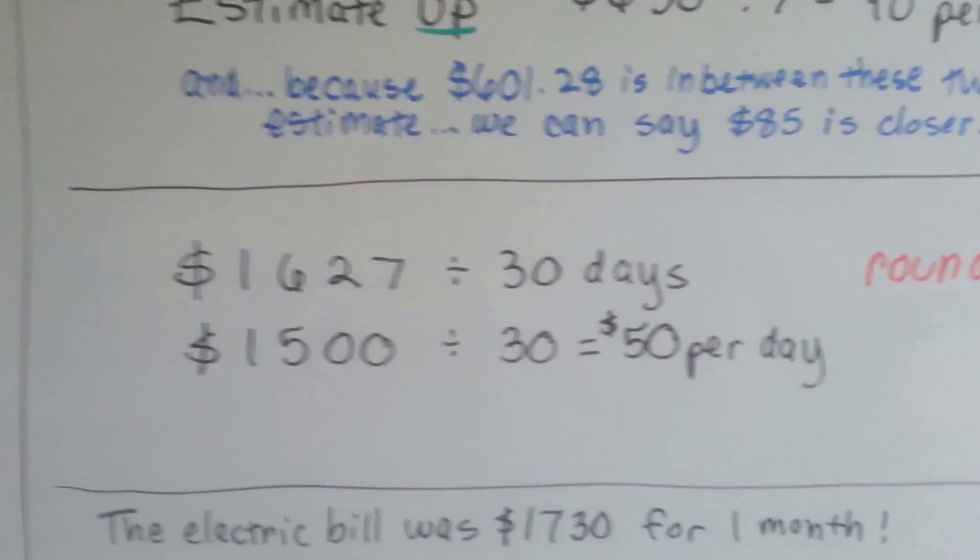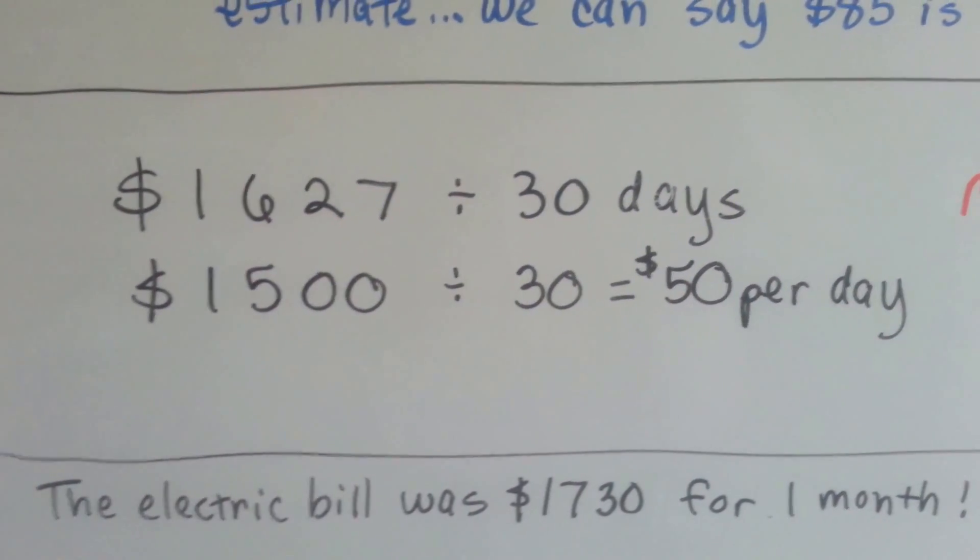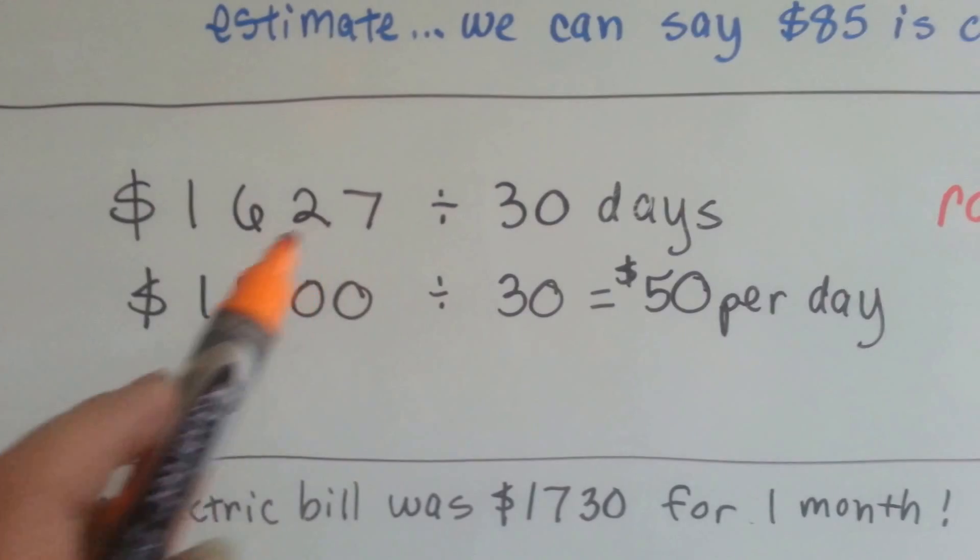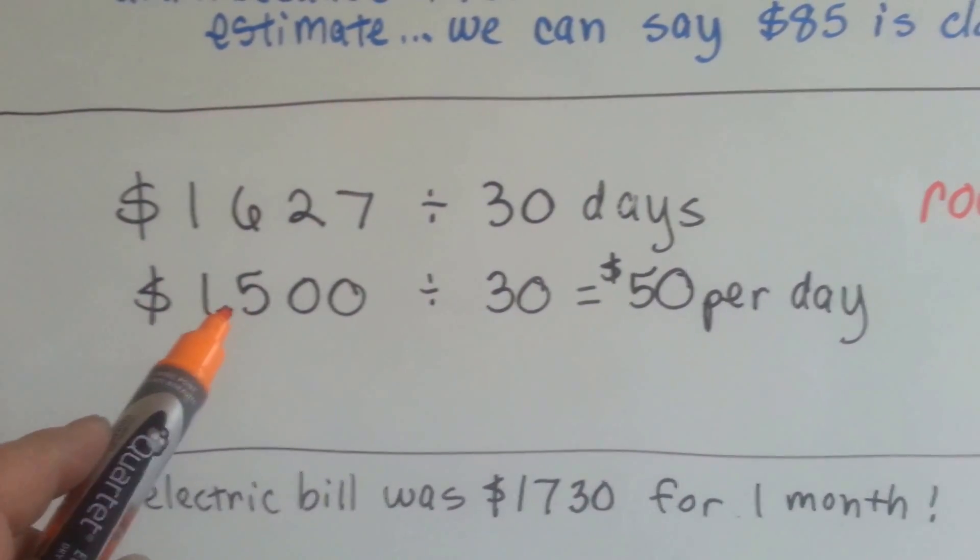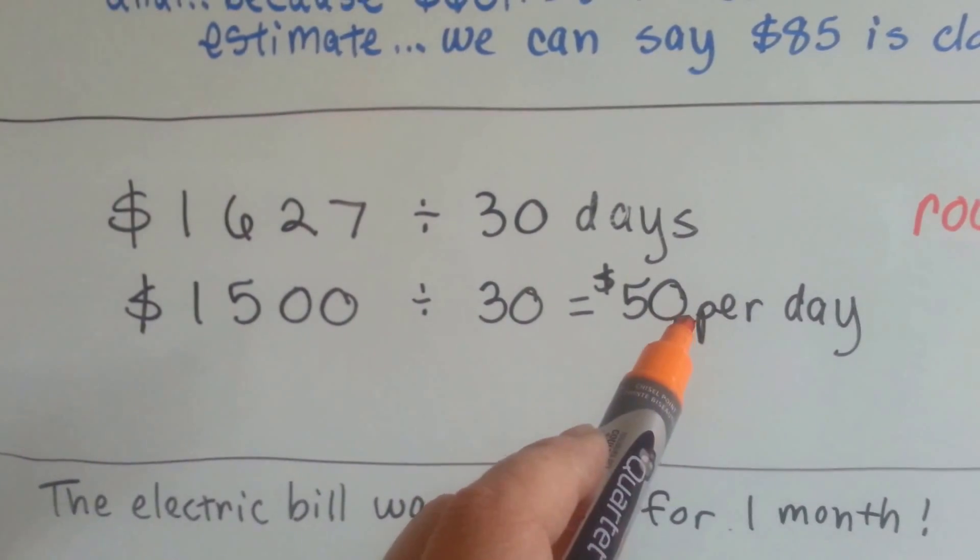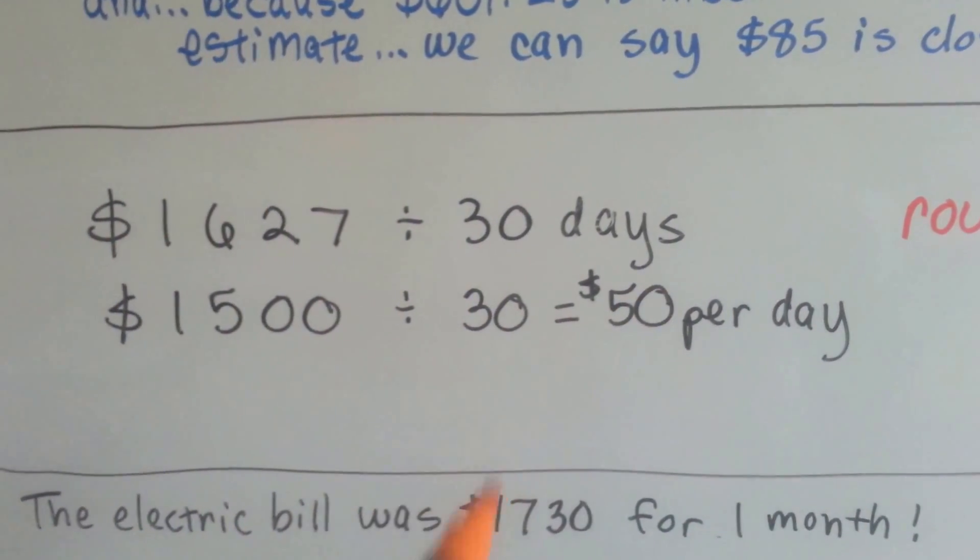What if there was a bill for $1,627 for a month? So you wanted to find out how much it was a day. Well, you could round it to $1,500 because 3 is very compatible with 15, and we could say $50 per day. We could also round up to $1,800 and say that it was $60 a day.